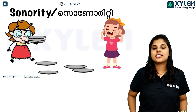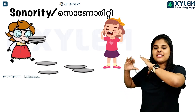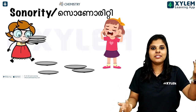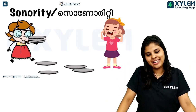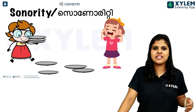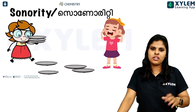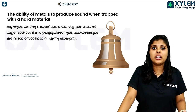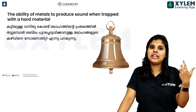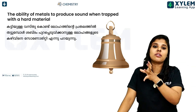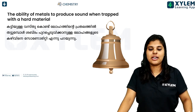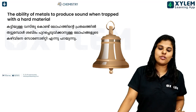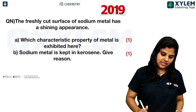And the next property is sonority. Sonority is the ability of a metal to produce a ringing sound when struck. This is the property of sonority — metal's ability to produce sound. If you see this in the exam, the answer is sonority.